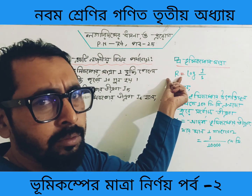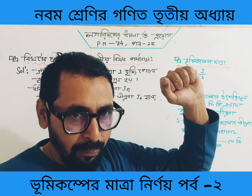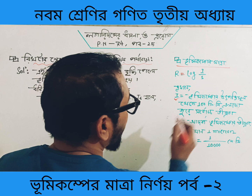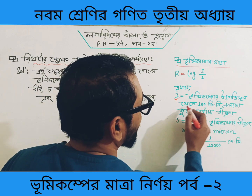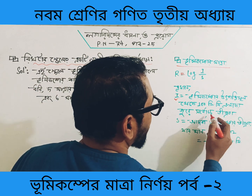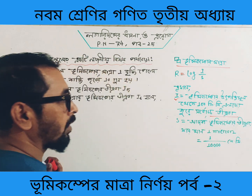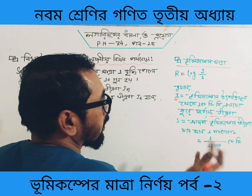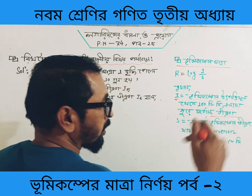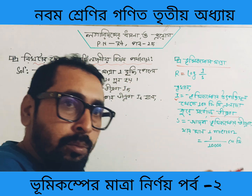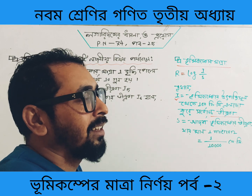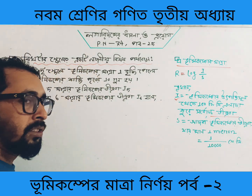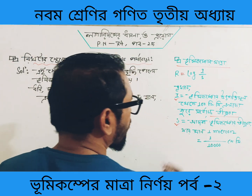R is equal to 1. This is the intensity of 100 km, and this is the intensity of 100 km.